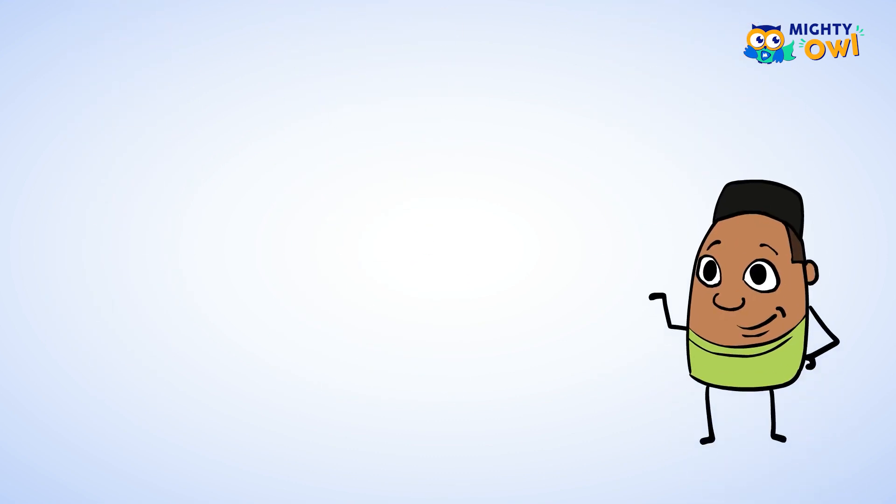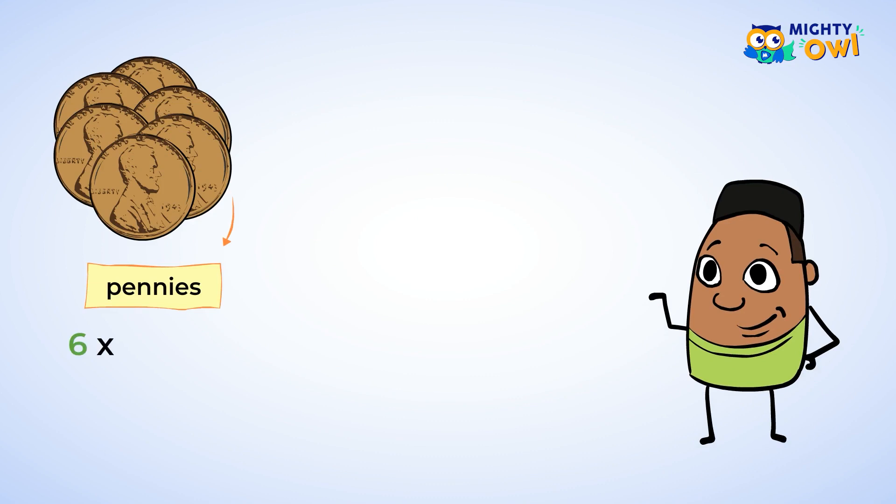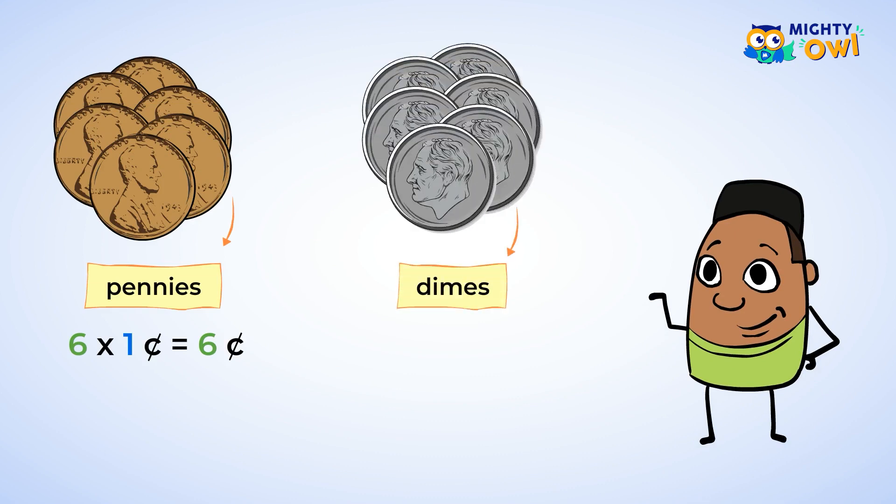Now in your other pocket you have six pennies, or six groups of one. And that means you have six cents. And then poof! Those six pennies turn into six dimes again. Six groups of ten. So that means you have sixty cents.